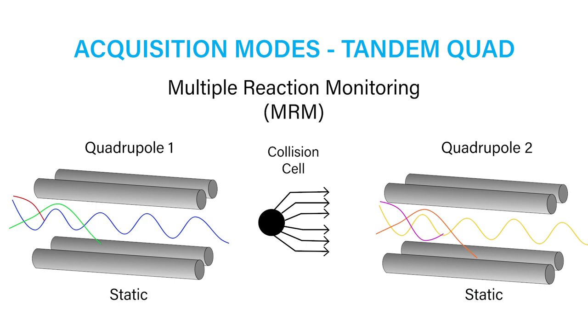The most common acquisition mode, using a tandem quad however, is known as MRM, multiple reaction monitoring, where both quads are set to static mode.